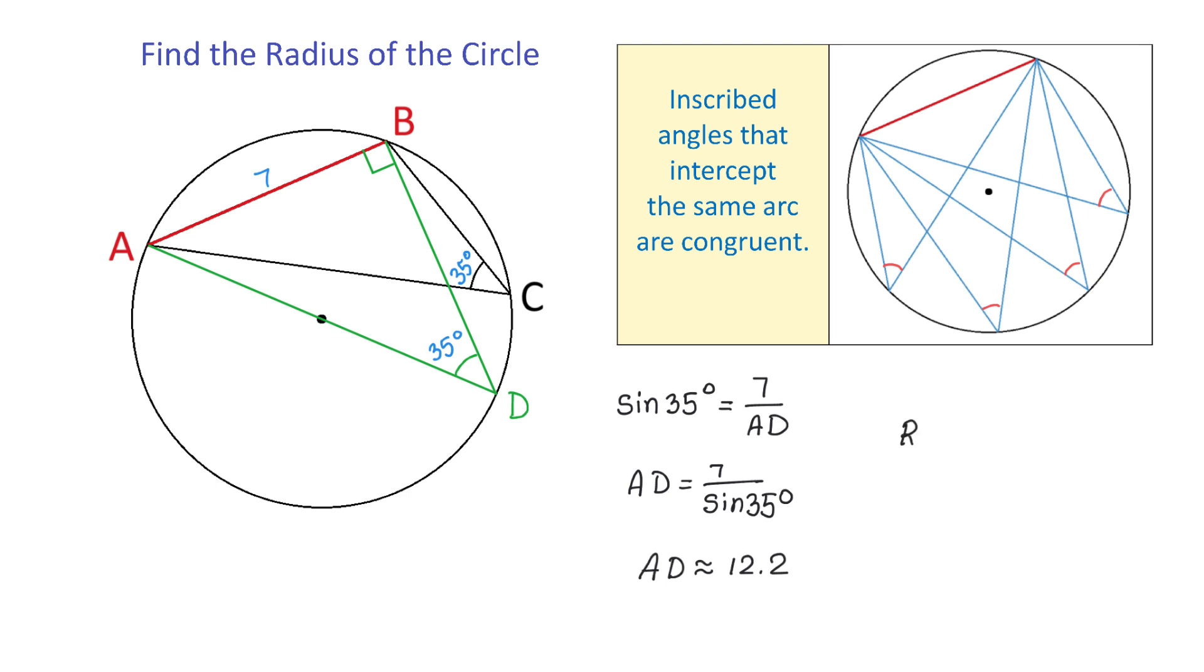So then the radius equals 12.2 divided by 2, which is approximately 6.1 units. Now we found the radius and the problem is completed. Thank you for watching.